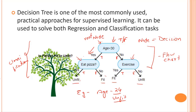When we pass a dataset into a decision tree algorithm, it internally builds a flowchart. Whenever you pass in new test data — say, a data point with three values — those values are checked at each node, and we follow the path down to find the corresponding leaf node. That is essentially how the decision tree works.